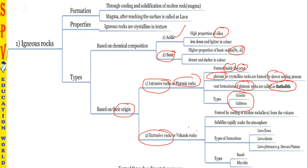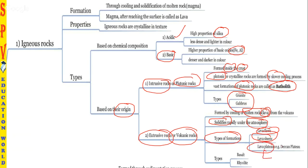Extrusive rocks form after cooling of molten lava on the surface of the earth. Lava flows over the earth's surface and solidifies rapidly due to the atmosphere. Lava varies in form from place to place — you can see lava flows, lava sheets where it cools into thin layers, and lava plateaus. The best example of a lava plateau in India is the Deccan Plateau. Types of extrusive igneous rocks include basalt and rhyolite.